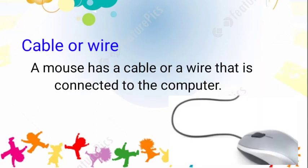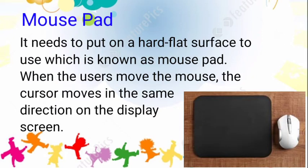The fourth part is the cable or wire. A mouse has a cable or wire that is connected to the computer. The fifth and last part is the mouse pad. A mouse needs to be placed on a hard flat surface to use, which is known as a mouse pad.